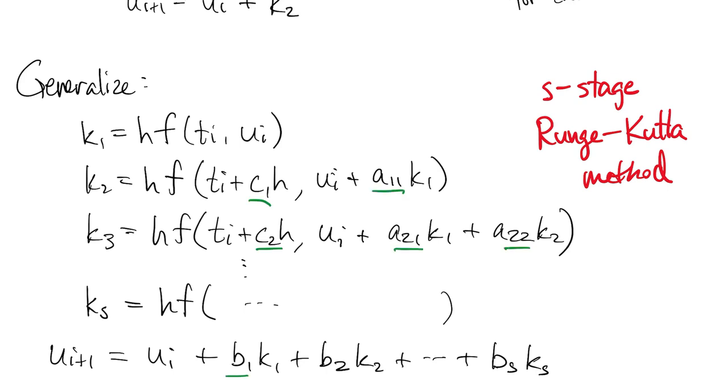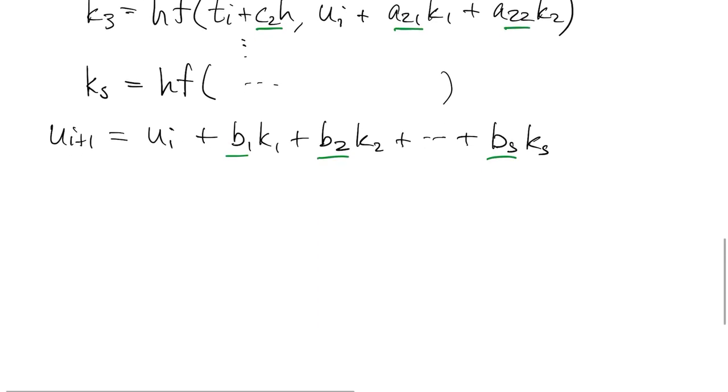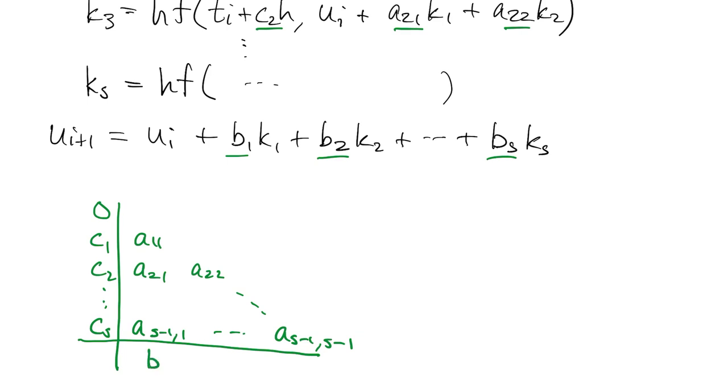Each method is completely determined by these constants that appear on the formulas, so the methods are often presented by just showing the constants. That should be Cs minus 1, by the way. This presentation is called a Runge-Kutta tableau.